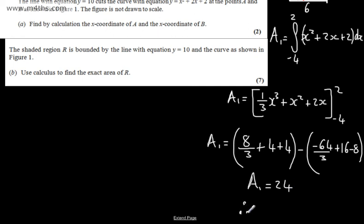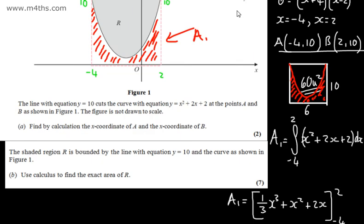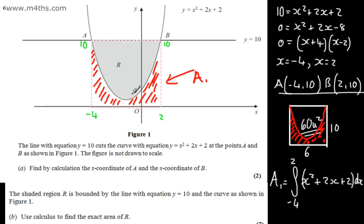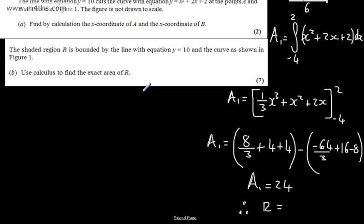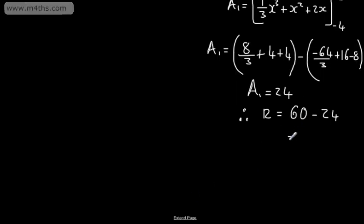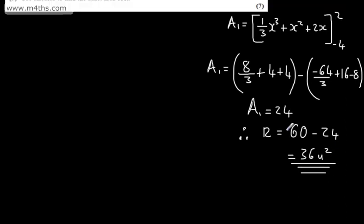Therefore, R equals the rectangle area minus Area 1, so R equals 60 minus 24, giving us 36 square units. That's one way to do it.